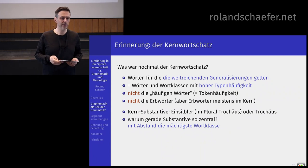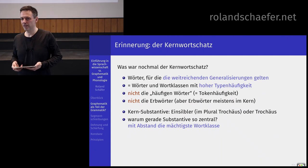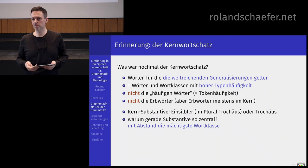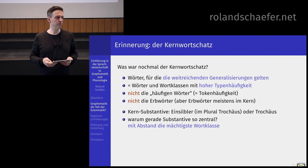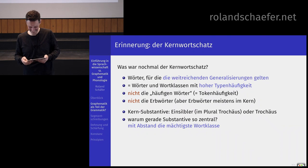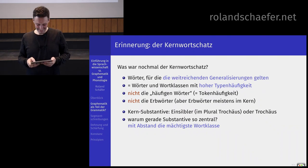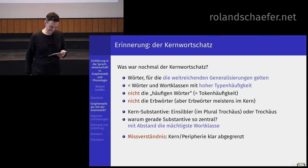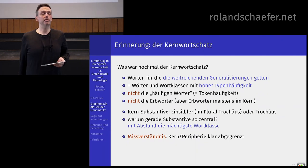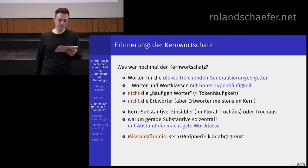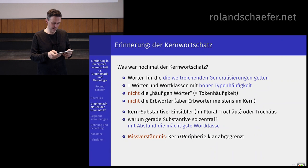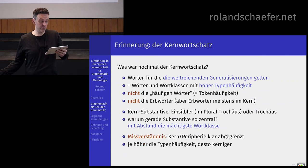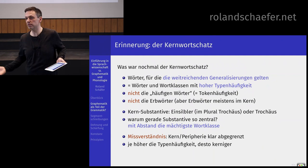Warum sind jetzt gerade die Substantive so zentral? Naja, das ist die mächtigste Wortklasse. Verben gibt es so im normalen Gebrauch ein paar tausend, Substantive zigtausend. Sie selber haben in Ihrem Sprachgebrauch mit ziemlicher Sicherheit über 10.000 Substantive. Außerdem: ein Missverständnis möchte ich vorbeugen – Kern und Peripherie sind nicht klar abgegrenzt. Es gibt nicht den Kern und die Peripherie, sondern das ist ein Kontinuum. Je höher die Typenhäufigkeit, desto kerniger ist die entsprechende Wortklasse.